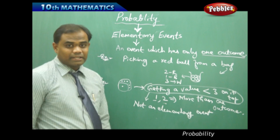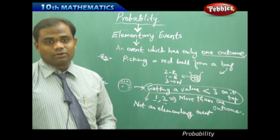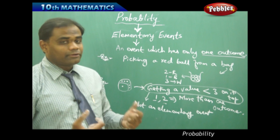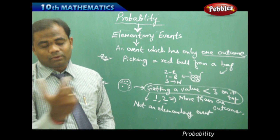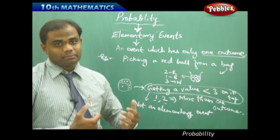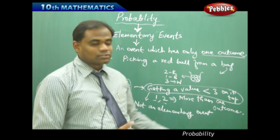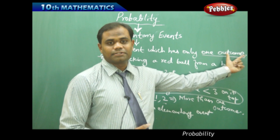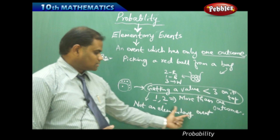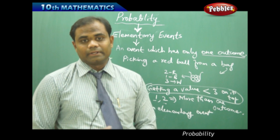So we understand the difference by identifying the number of outcomes in an event. Picking the red ball from a bag is purely an elementary event because there is only one outcome. Getting a value less than three on the top of a dice is not an elementary event because we can get two values — either one or two — giving two outcomes, which contradicts the definition.